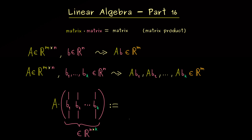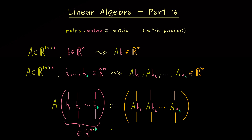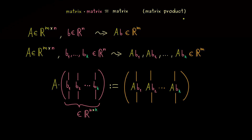What should happen is that we get out a new matrix again with exactly k columns. Moreover, what we want is that at each column we just apply the matrix A as before. Therefore, the first column of the new matrix should read AB1, and then we simply continue until we have the last column ABk. Now please note, it does not work for all possible combinations of matrices, because we know A is an m times n matrix and this new matrix here is an n times k matrix. Hence, these inner dimensions have to match. The other two numbers give us the shape of the resulting matrix, which is an element of R to the power m times k.